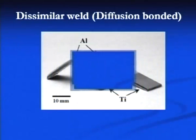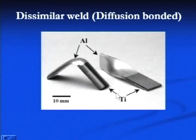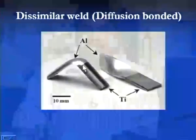Dissimilar welds produced by diffusion bonding include a titanium and aluminum joint. Dissimilar metals which present problems related to metallurgical compatibility can be effectively welded by the diffusion welding process.